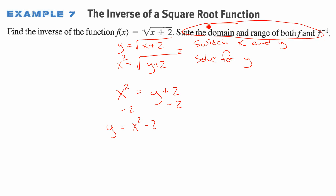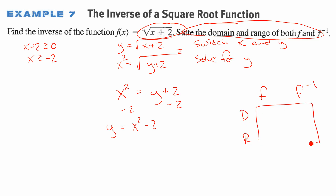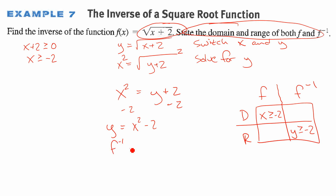Let's find the domain and range of both functions. For the original f(x) = √(x + 2), x + 2 must be greater than or equal to zero, so the domain is x ≥ −2. Since switching to the inverse swaps domain and range, the range of the inverse is y ≥ −2. The inverse function y = x² − 2 has a domain of all real numbers, which means the range of the original is also all real numbers.